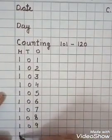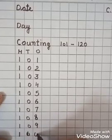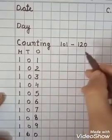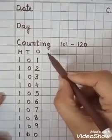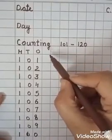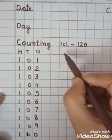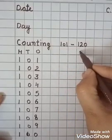Then, write down here: 1, 1, 0 — 110. Now, here, leave how many boxes? 1, 2, 3, 4 — four boxes.